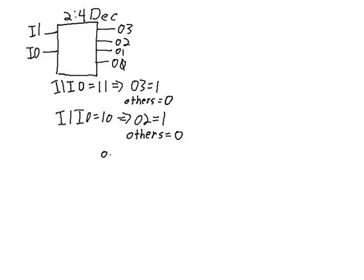And you can see if I1 and I0 are 0, 1, then output 1 will be equal to 1. The others will be 0. And if I1 and I0 are both 0s, then output 0 will be 1, and the others will be 0.